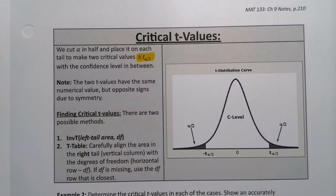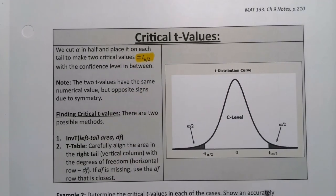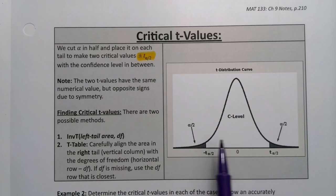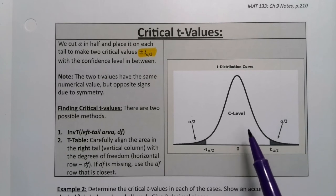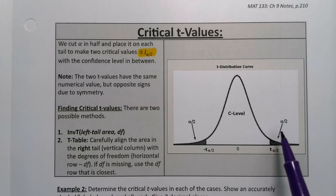So we need to be able to find that plus or minus t alpha over 2. If you're thinking that picture looks really familiar, yes it does. That's because t-curves look like z-curves unless you put them side by side and you can see the z-curve is taller. So this is a t-curve for our purposes.